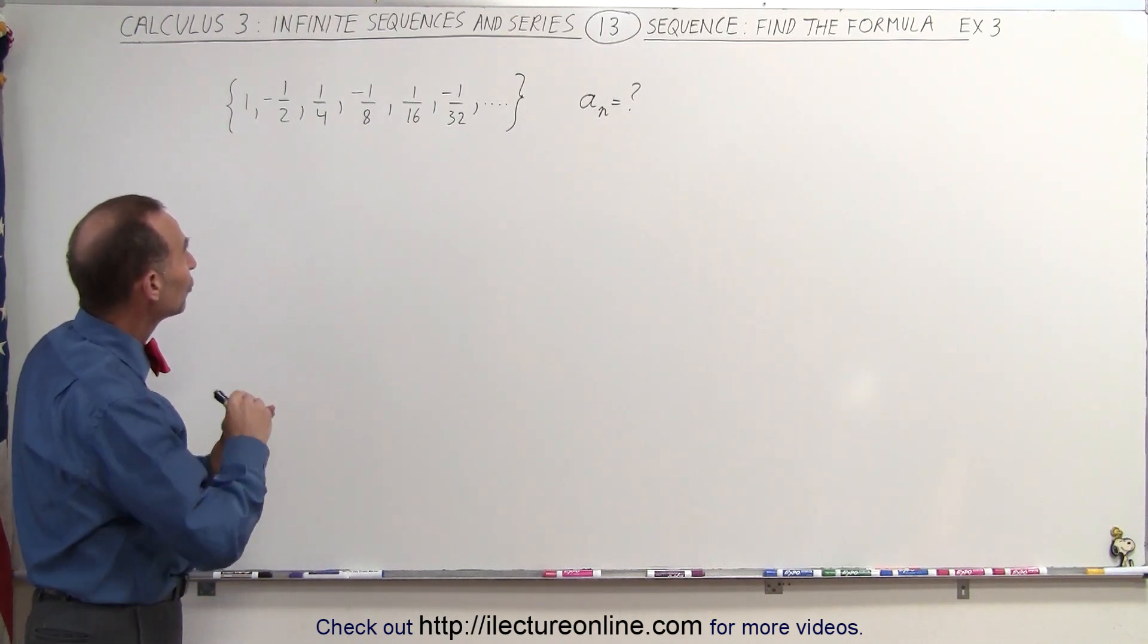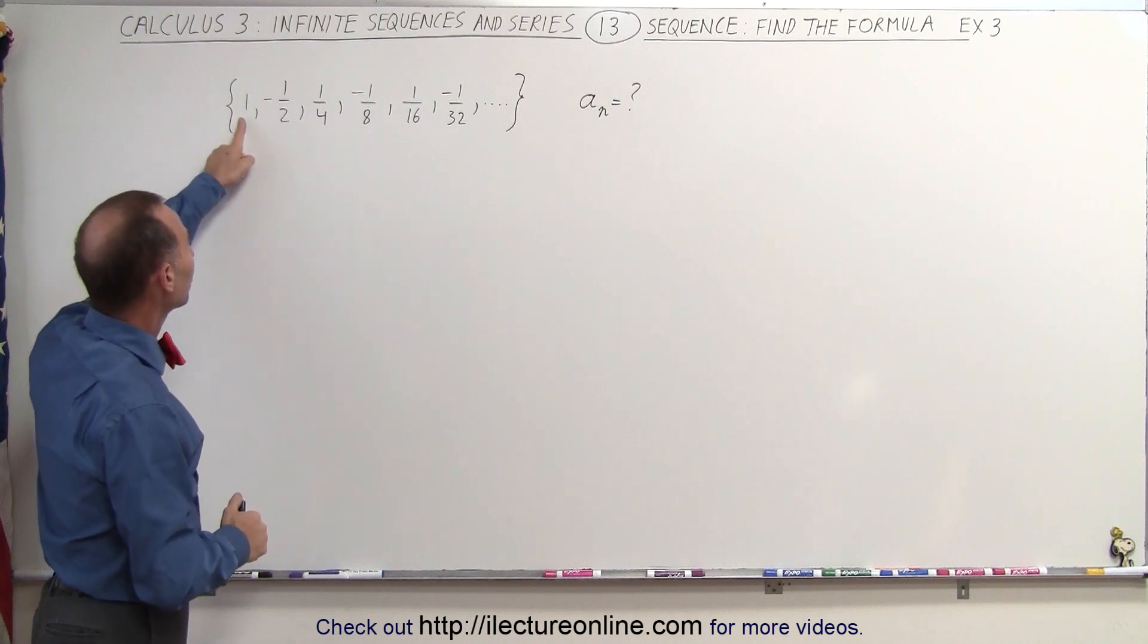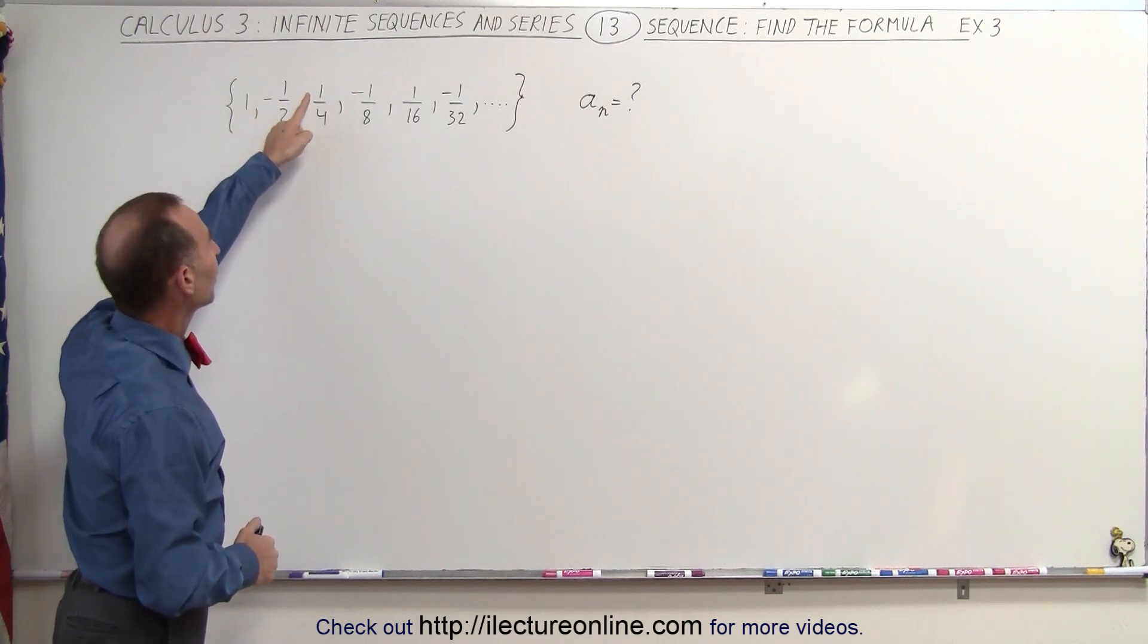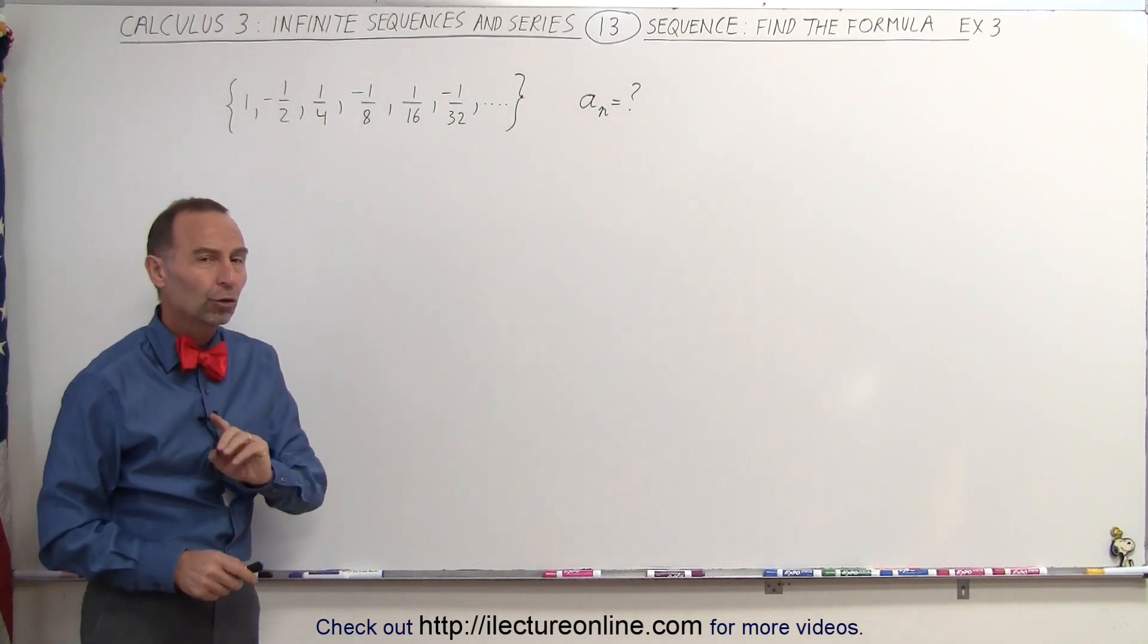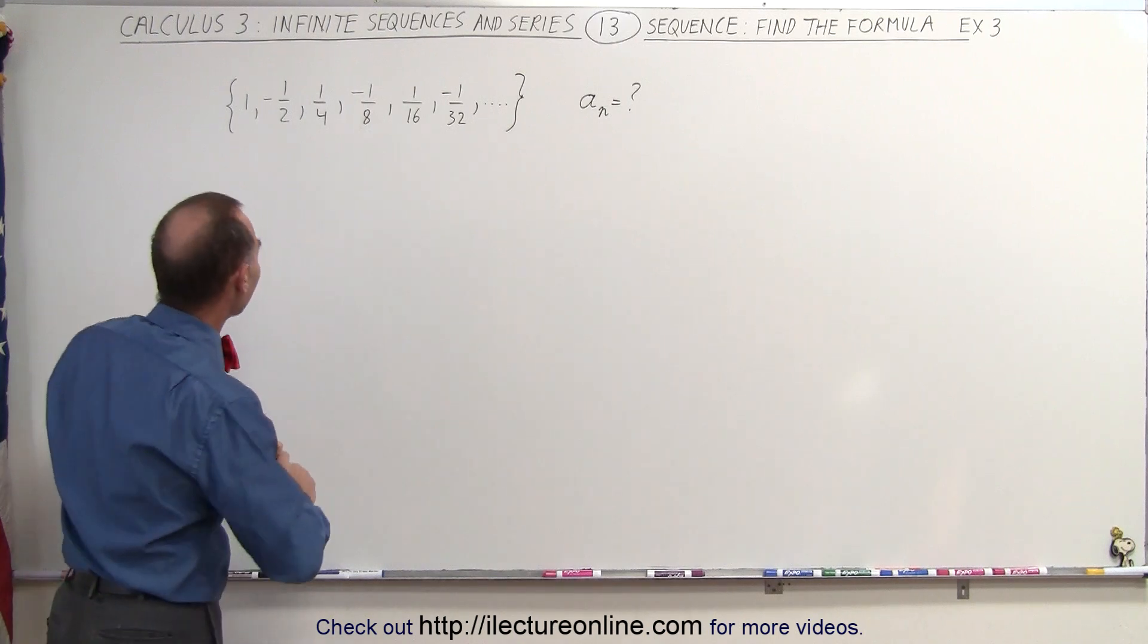We see that the numerators do change signs. We have a positive one, a negative one, a positive one, a negative one, and so forth. So the numerators alternate in signs.